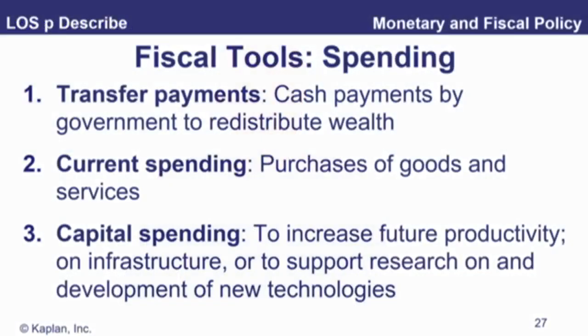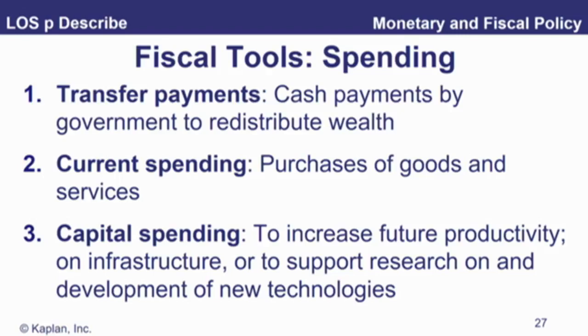All right, tools. Let's just break down what we mean by government spending. Three types to look at. First, transfer payments — we've just talked about those a little bit. That's payments by the government to redistribute wealth: unemployment, food stamps, etc. Then we can break down their other spending — their discretionary spending — into current and capital. Current covers goods and services. Capital spending is where we're trying to increase future productivity, so we are building infrastructure, research, development of new technologies.